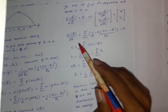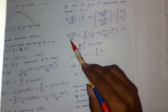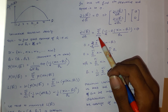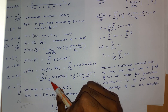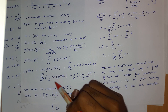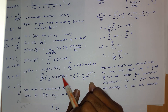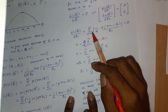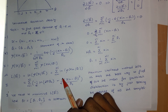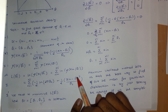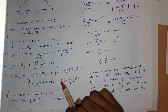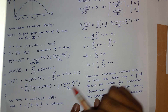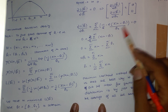Differentiating the log-likelihood with respect to the mean (theta_1): the second term does not contain theta_1, so its derivative is directly zero. For the first term, differentiating (x_in minus theta_1) squared with respect to theta_1 brings out a factor of 2 with a minus sign, divided by theta_2. This gives the derivative expression shown.